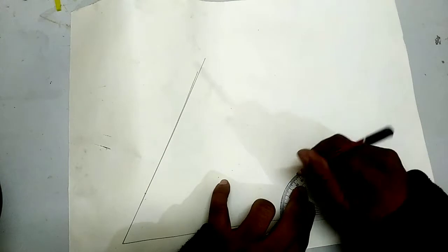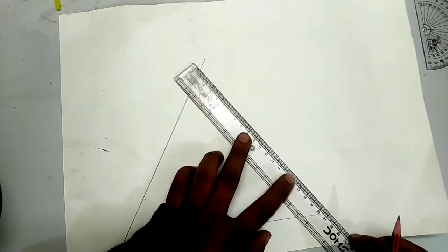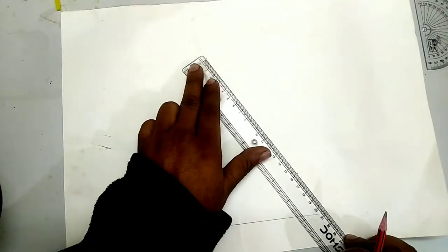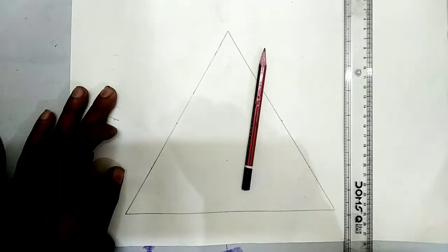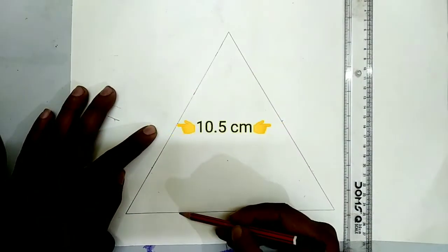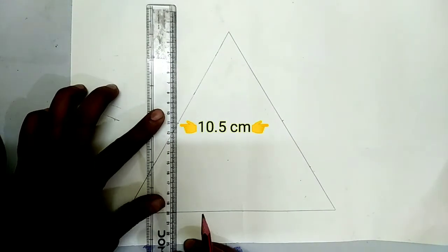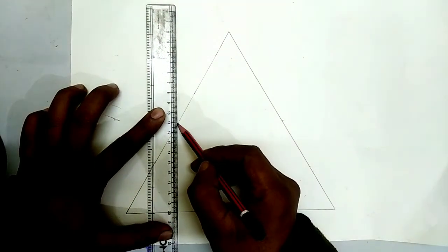At 60 degrees, it becomes an equilateral triangle. Now from the midpoint we will draw a perpendicular to the base.